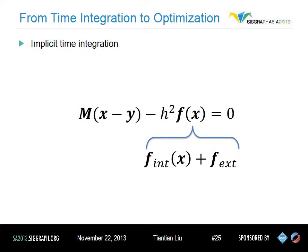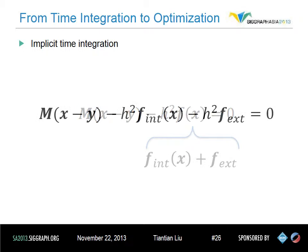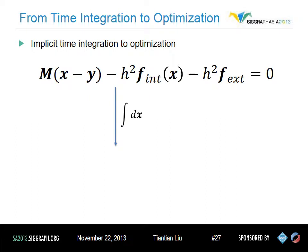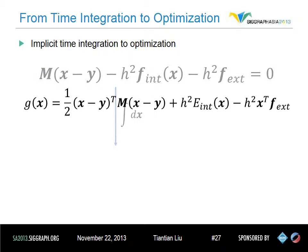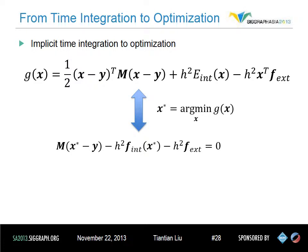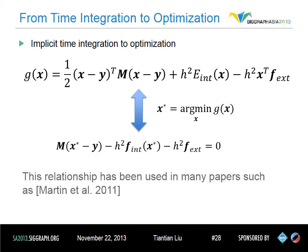We split the force term into internal force and external force. The internal force is a conservative force that we can derive from potential energy, and the external force can be seen as constant during a certain time step, such as gravity, wind, and penalty force. In order to solve this equation, we integrate the function over x and define an optimization problem. The second term changes its sign because force can be interpreted as the negative gradient of potential energy. In that case, the argmin of the objective function g, denoted x*, is the exact solution of our implicit time integration.